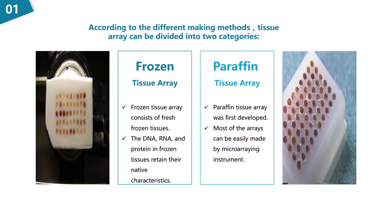Frozen tissue arrays consist of fresh frozen tissues. Since frozen tissue sections don't go through any fixation procedures, the DNA, RNA, and protein in frozen tissues retain their native characteristics. Paraffin tissue arrays were first developed, and they can help scientists high-throughput analyze gene and protein expressions in multiple tissue samples, especially analyzing different protein levels with antibodies by immunohistochemistry.